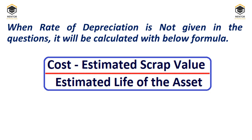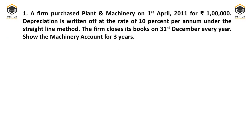From the cost we deduct the estimated scrap value. Every asset has a definite lifetime — for example, if the economic life is 10 years, after that we replace the asset. When you sell it as scrap after 10 years, the amount you receive is the estimated scrap value. Dividing cost minus scrap value by the estimated life of the asset gives us the annual amount of depreciation.